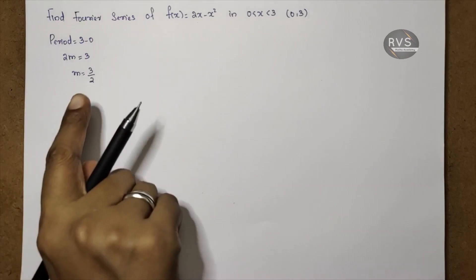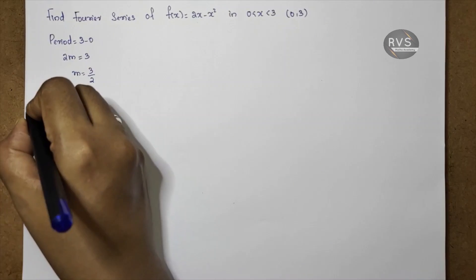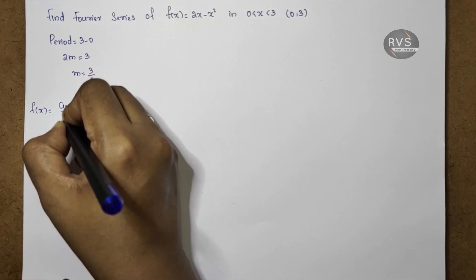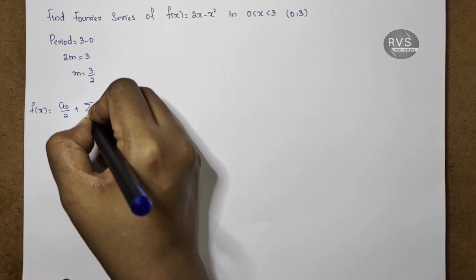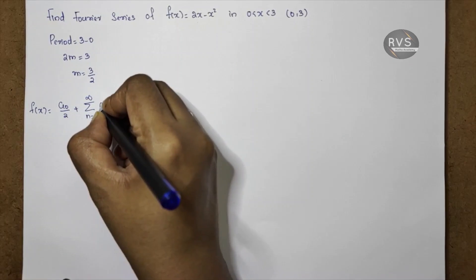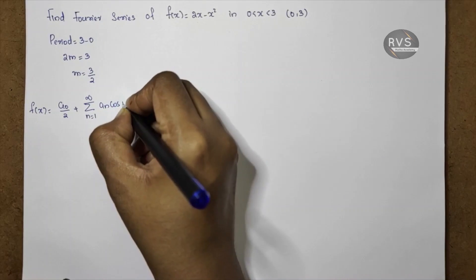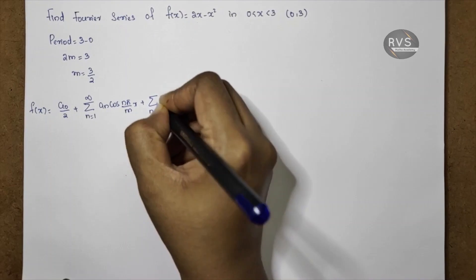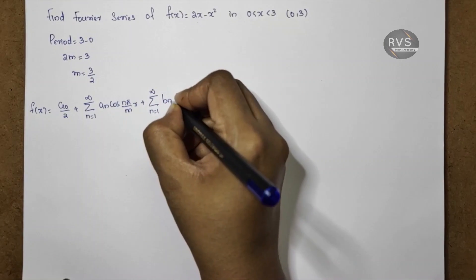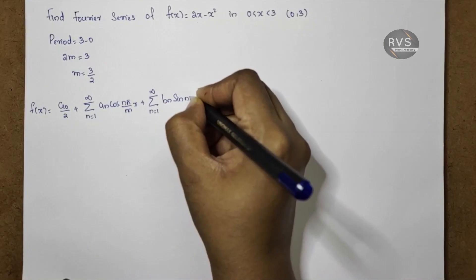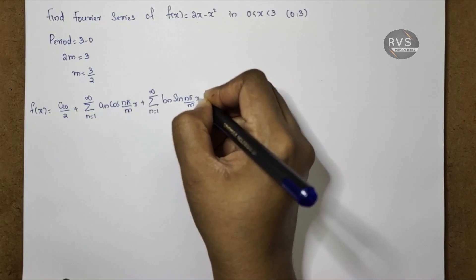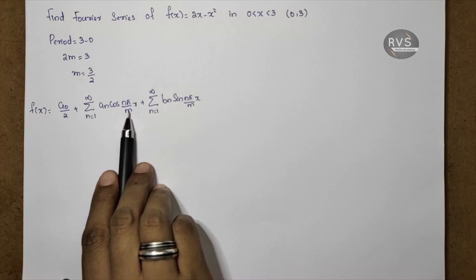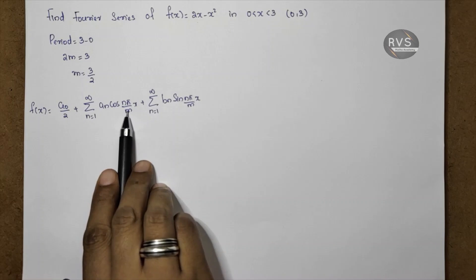The Fourier series formula on the interval 0 to 3 is: a0 by 2 plus summation n equal to 1 to infinity of bn into sin n pi by mx. That is the Fourier series formula, where m is equal to 3 by 2.